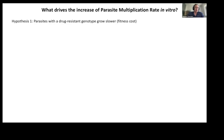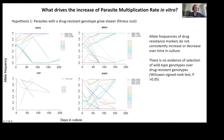So what could drive this increase of parasite multiplication rate in vitro? Based on the literature, we might expect genotypes with drug-resistant alleles to grow slower, due to a fitness cost associated with drug resistance — so wild-type genotypes would out-compete them in culture. However, this is not what we observed. Each line represents the allele frequency of a drug-resistant marker increasing or decreasing over time in culture, from different isolates, and there is no evidence of selection of wild-type over drug-resistant genotypes. So we can conclude that drug-resistant genotypes do not drive the increase of parasite multiplication rates in vitro.